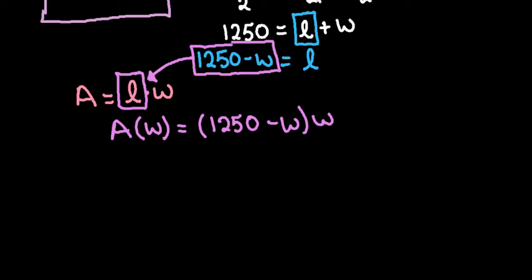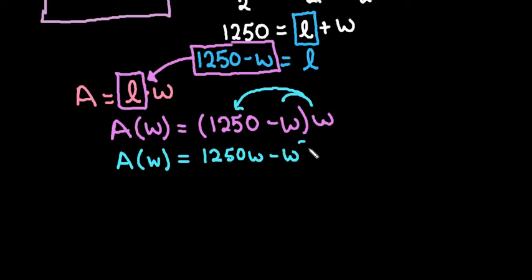So what we're going to do now is we're going to take and we're going to distribute this W into our equation, and so we can say that area as a function of the width is equal to 1,250W minus W squared.